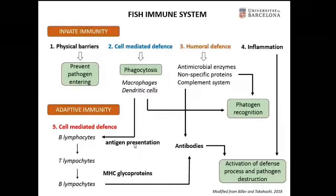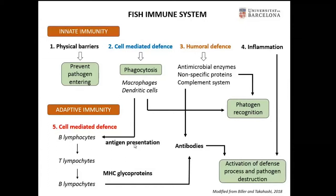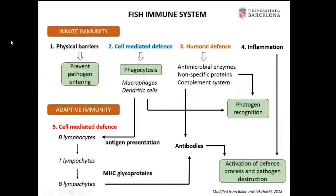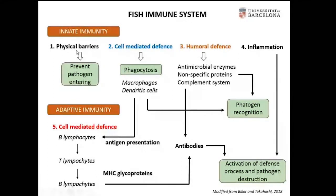In this slide, I would like to show you a schematic view of the fish immune system. The fish immune system is divided into the innate and the adaptive immune systems, both divided into cell-mediated defense and humoral factors. It is known that these two systems work together in order to destroy invaders or to trigger defense processes. The innate immune system includes the components of the physical barriers, such as the skin and the other mucosas.